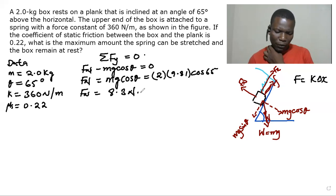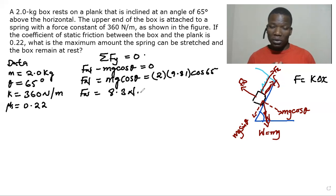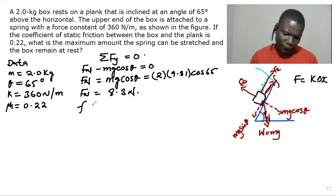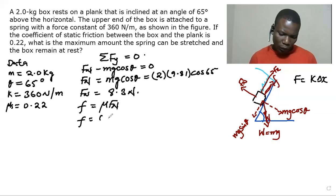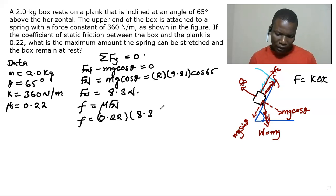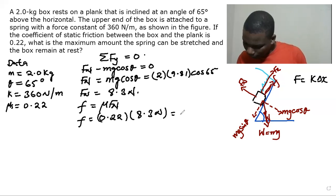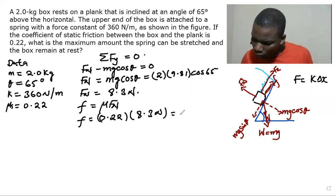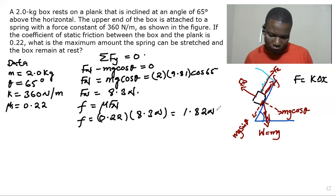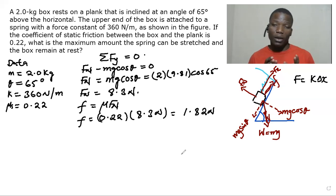Since we found the normal force, we can quickly find the friction force. The relationship is: friction force equals mu times normal force, which is 0.22 multiplied by 8.3, giving us 1.82 newtons. This is our friction force.